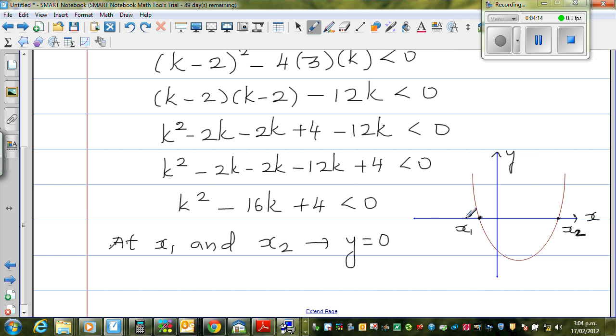When x is greater than x1 or less than x1, at x1 and x2 we call that the root. You should understand that at that point y equals 0, or your parabola is becoming 0 at x1 and x2.